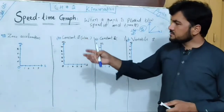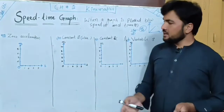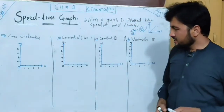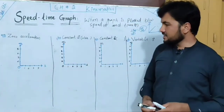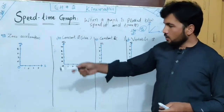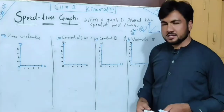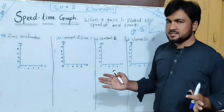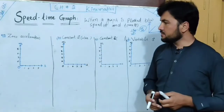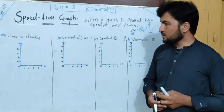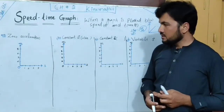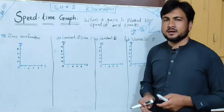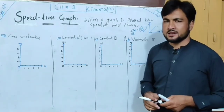The first case is zero acceleration. The x-axis is time and the y-axis is meters per second. The second thing is that the speed on the graph remains the same along the x-axis.